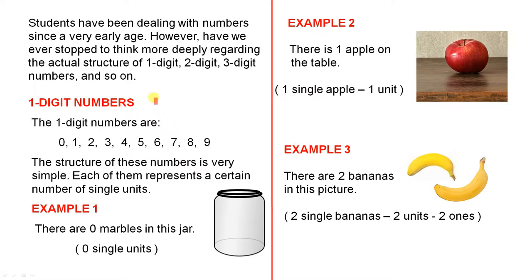Let's look at one-digit numbers first. The one-digit numbers are 0, 1, 2, 3, 4, 5, 6, 7, 8, 9. They are called one-digit numbers because you only see a single digit in each case. The structure of these numbers is very simple. Each of them represents a certain number of single units.